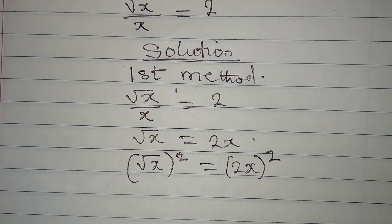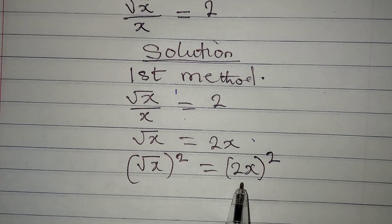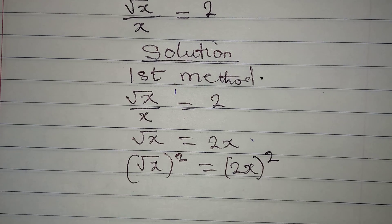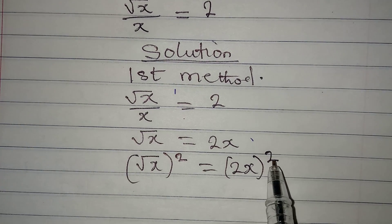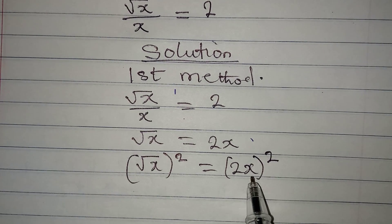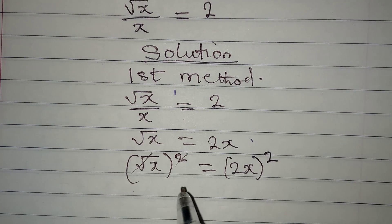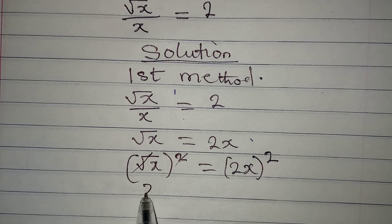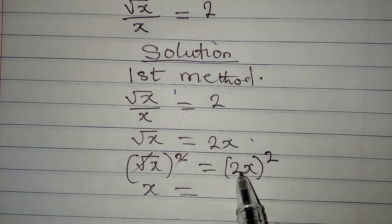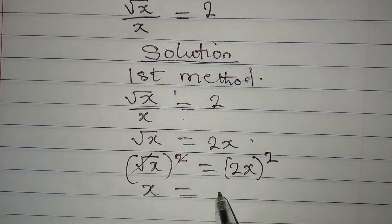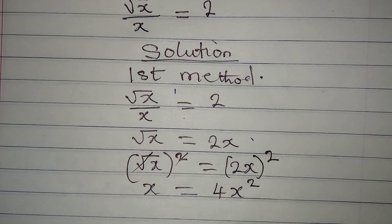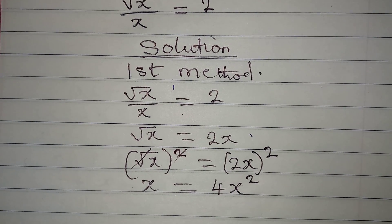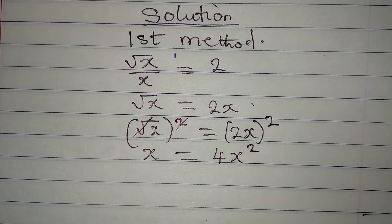...to remove the square root by squaring both sides, so we have 2x, and then we square this. If you fail to put this in brackets, then your answer will not be correct, because the square will be for x alone and not 2. This will cancel this, and x will now be equal to 4x squared.